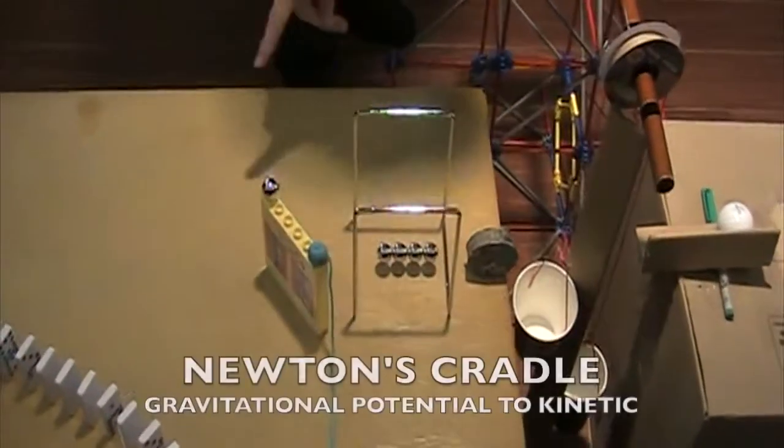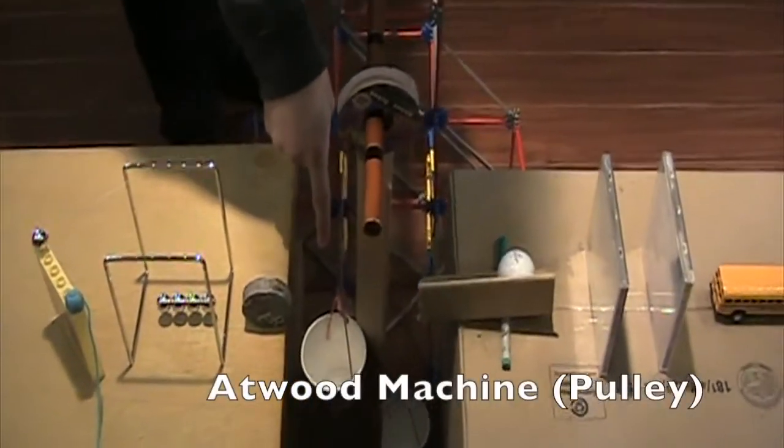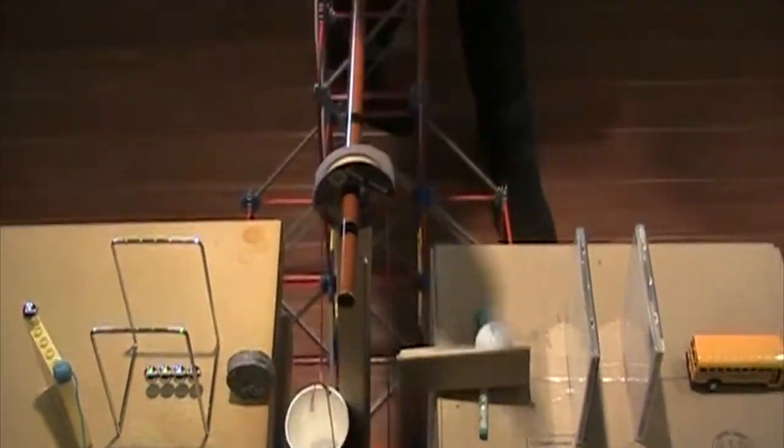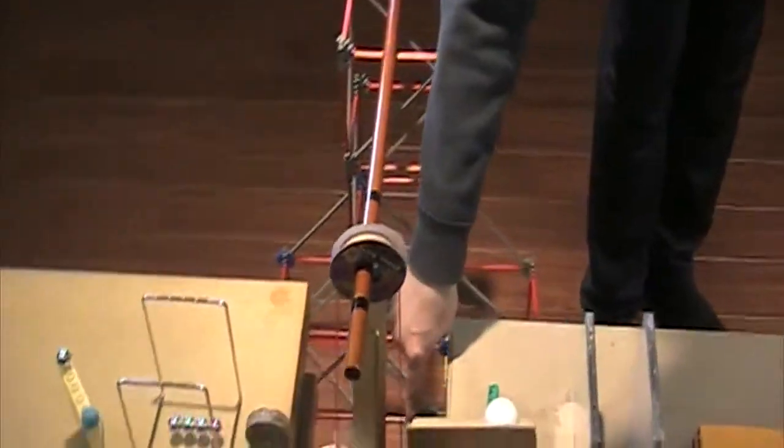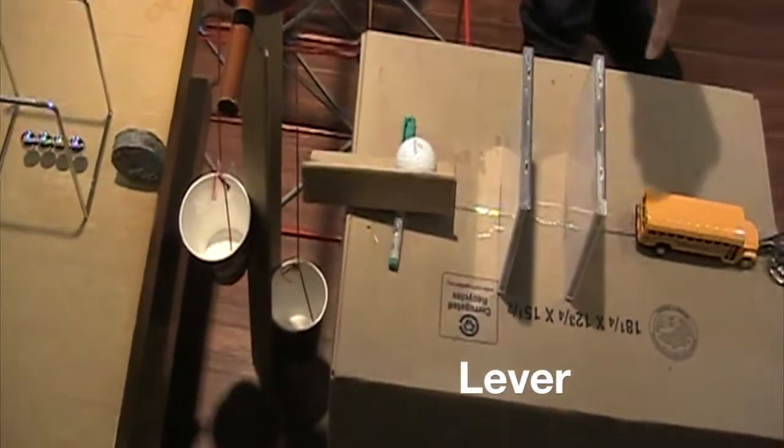Activating the Newton's Cradle, which will send this thing into the cup, starting the Atwood machine. Sending this cup up, which will hit this lever, sending the golf ball into the CDs.